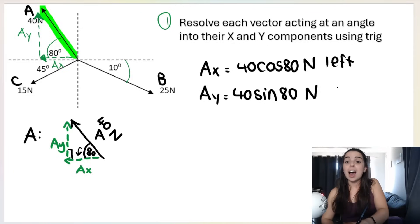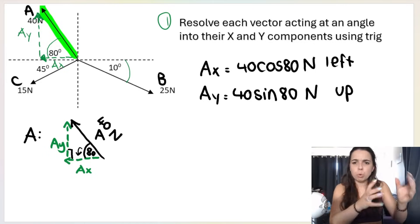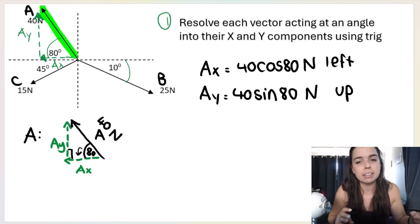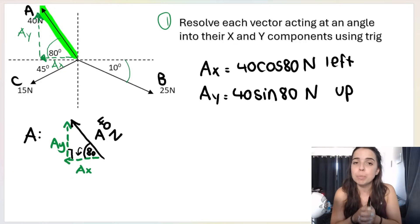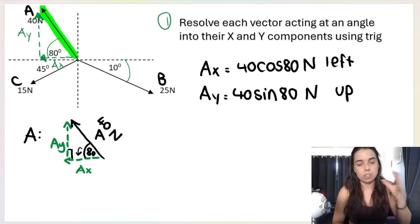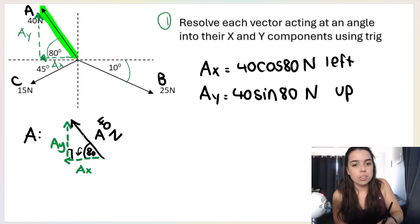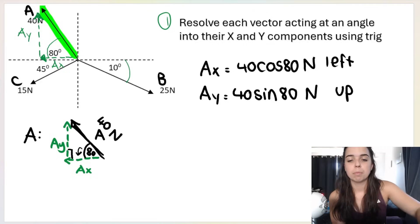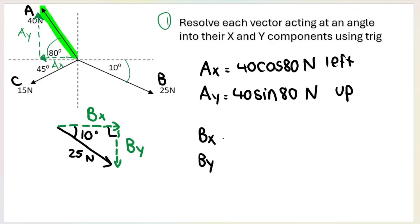A-y — look at where A-y is relative to the angle: it's opposite the angle, and opposite over hypotenuse is sine. So A-y equals 40 sin 80 newtons, pointing up. The shortcut is: write the hypotenuse first — that's 40 — then the trig ratio, then the angle. Now for vector B: looking at my diagram, B-x is adjacent to the 10 degree angle, so B-x equals 25 cos 10 newtons, pointing to the right.